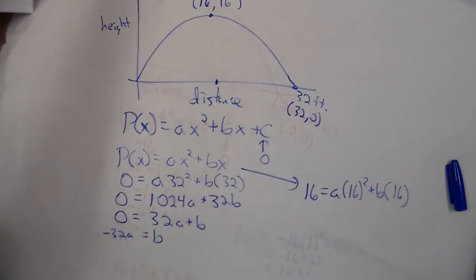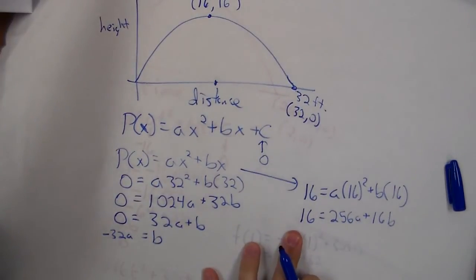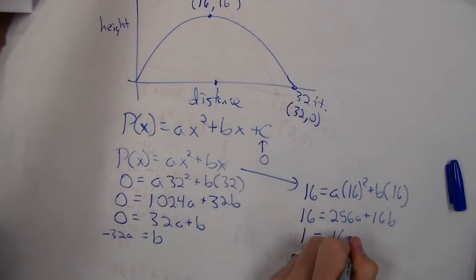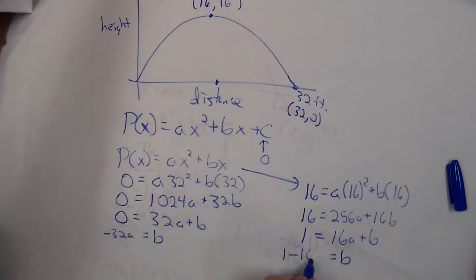Sixteen squared is 256. Now we divide everything by 16: 1 = 16a + b, and we get b = 1 - 16a.